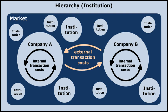Bargaining costs are the costs required to come to an acceptable agreement with the other party to the transaction, drawing up an appropriate contract and so on. In game theory this is analyzed, for instance, in the game of chicken. On asset markets and in market microstructure, the transaction cost is some function of the distance between the bid and ask.